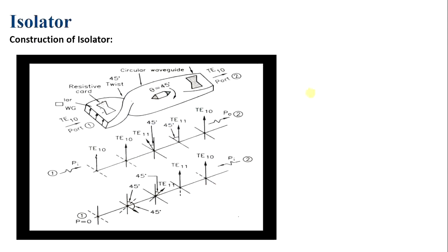For the construction of the isolator, a rectangular waveguide is taken. Near port 1, a resistive card is placed. The waveguide is then mechanically twisted by 45 degrees. In the further section of the waveguide, a ferrite rod is placed. Near port 2 there is another resistive card. This is how the isolator is constructed.